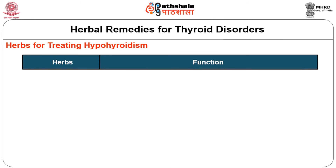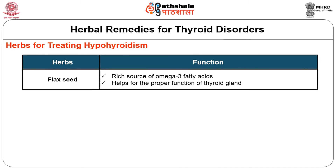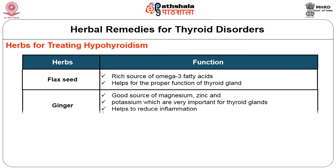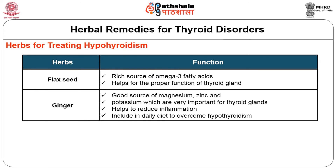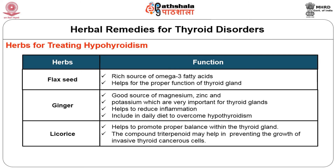Some herbs and natural foods that help with thyroid conditions are: Flax seeds, a rich source of omega-3 fatty acids — taking 5 grams helps to improve thyroid function. Ginger is a good source of magnesium, zinc, and potassium, which are very important for the thyroid gland; it helps reduce inflammation and should be included in the daily diet. Liquorice helps promote balance within the thyroid gland, and its triterpenoid compound may help prevent the growth of invasive thyroid cancerous cells.